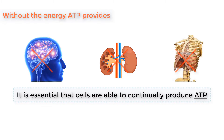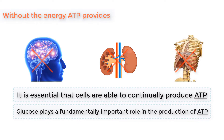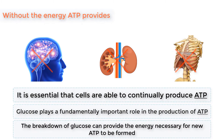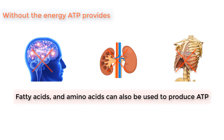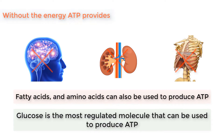It is essential that cells are able to continually produce ATP. Glucose plays a fundamentally important role in the production of ATP. Glucose itself is not used to build new ATP; rather, the breakdown of glucose can provide the energy necessary for new ATP to be formed. Fatty acids and amino acids can also be used to produce ATP. However, glucose is the most regulated molecule that can be used to produce ATP.